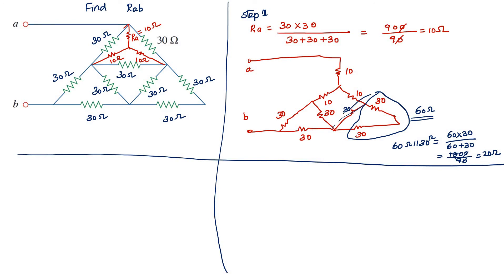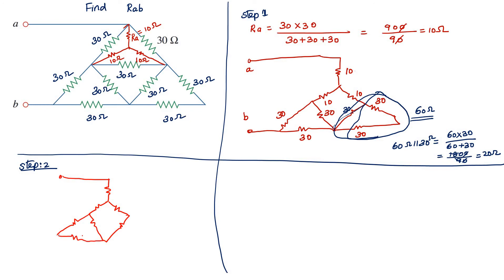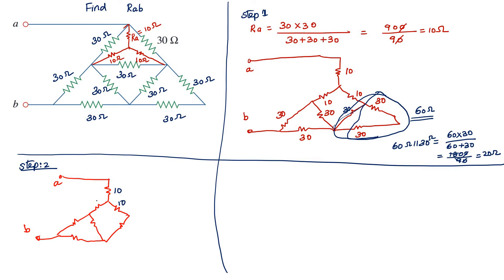So the total combination is replaced by 20 ohm. This is step number 2. Now I am going to redraw this network again, with values 10, 10, 20, and 30, 30, 30. I am going to draw one star inside this delta. The answer for this star conversion is already known — all are 10 ohm.